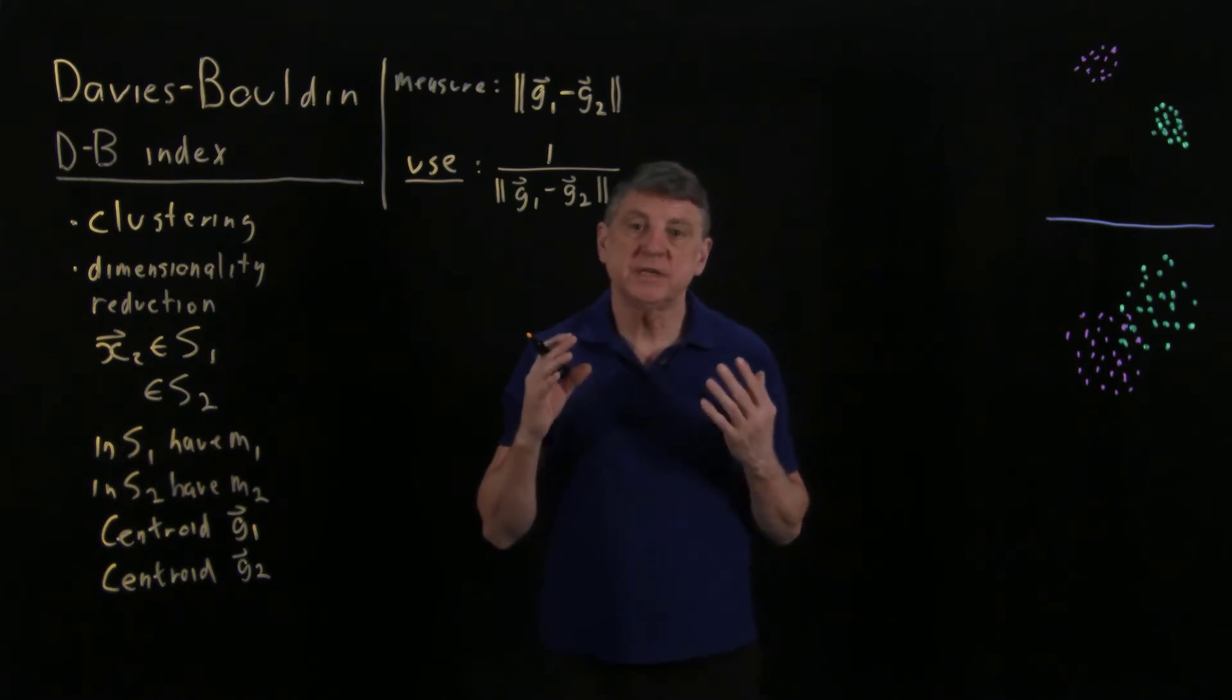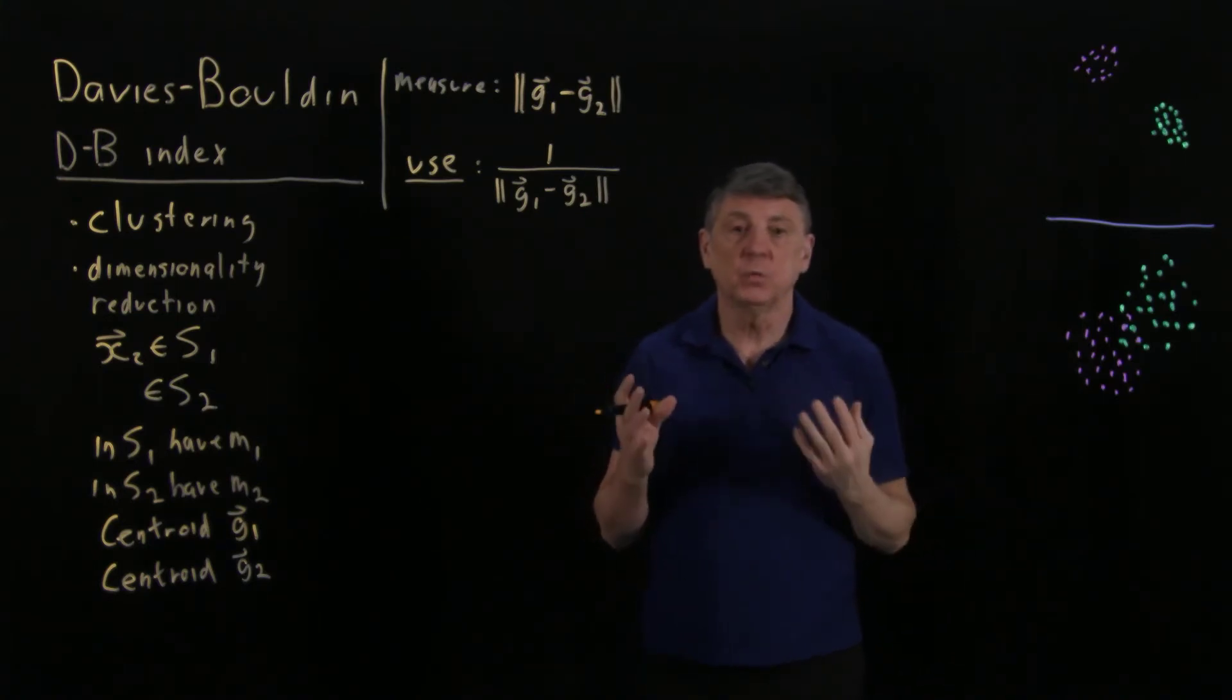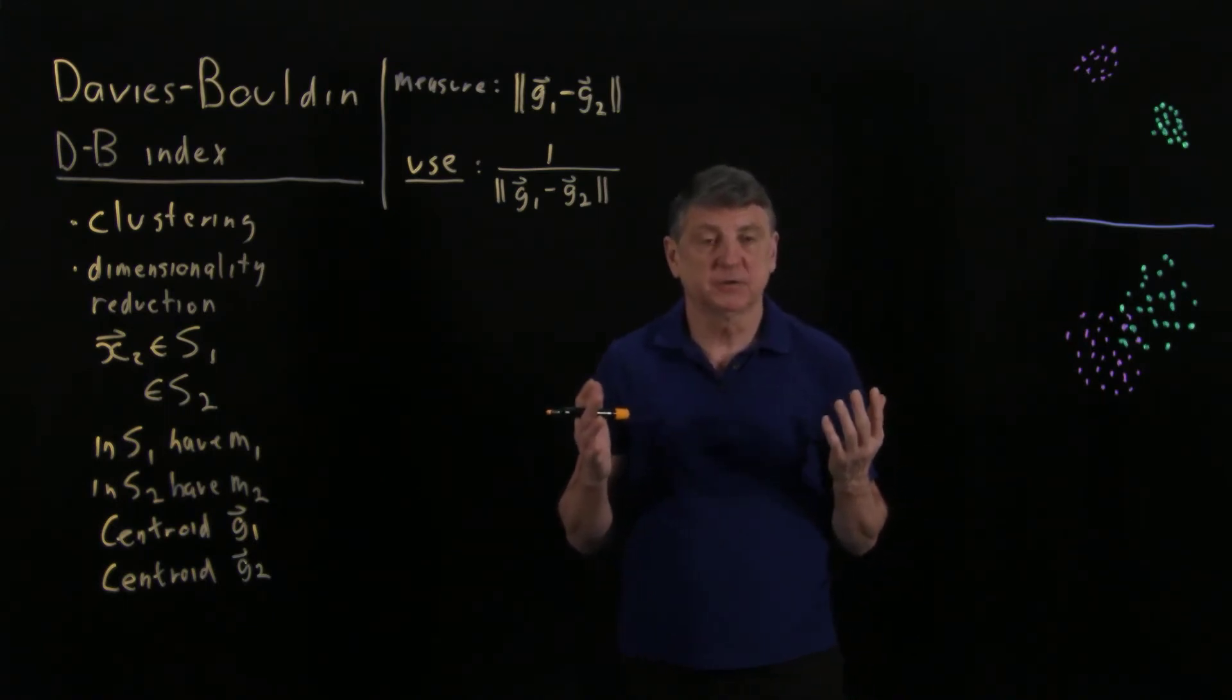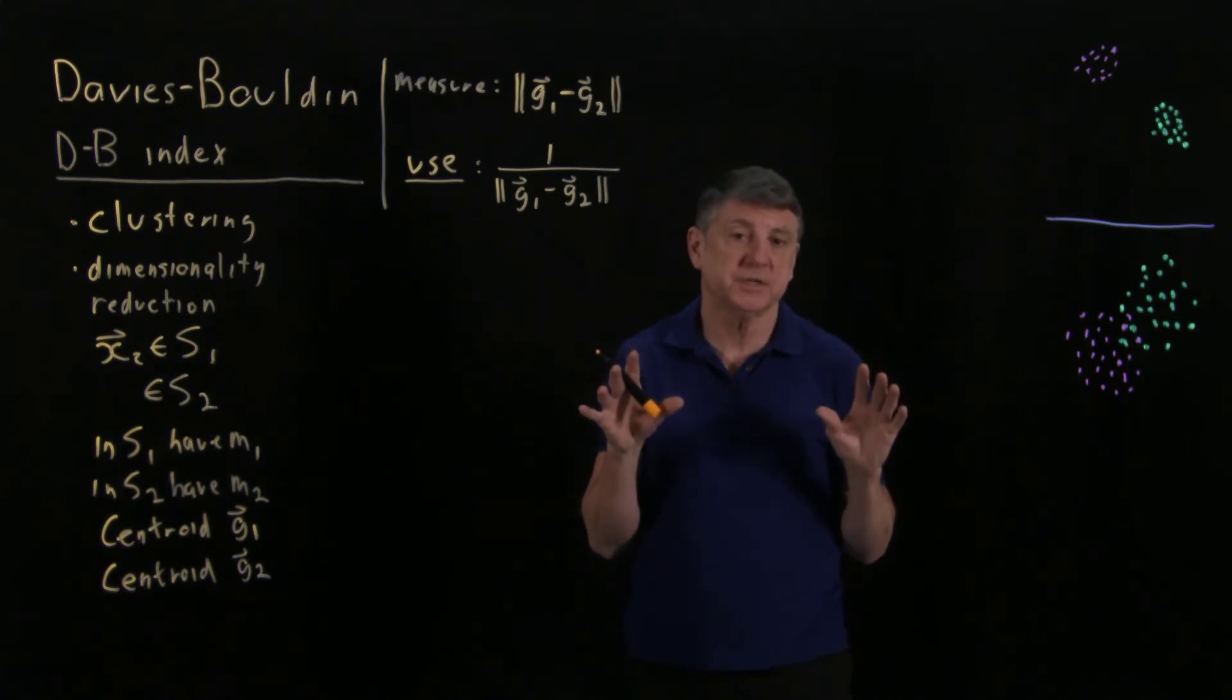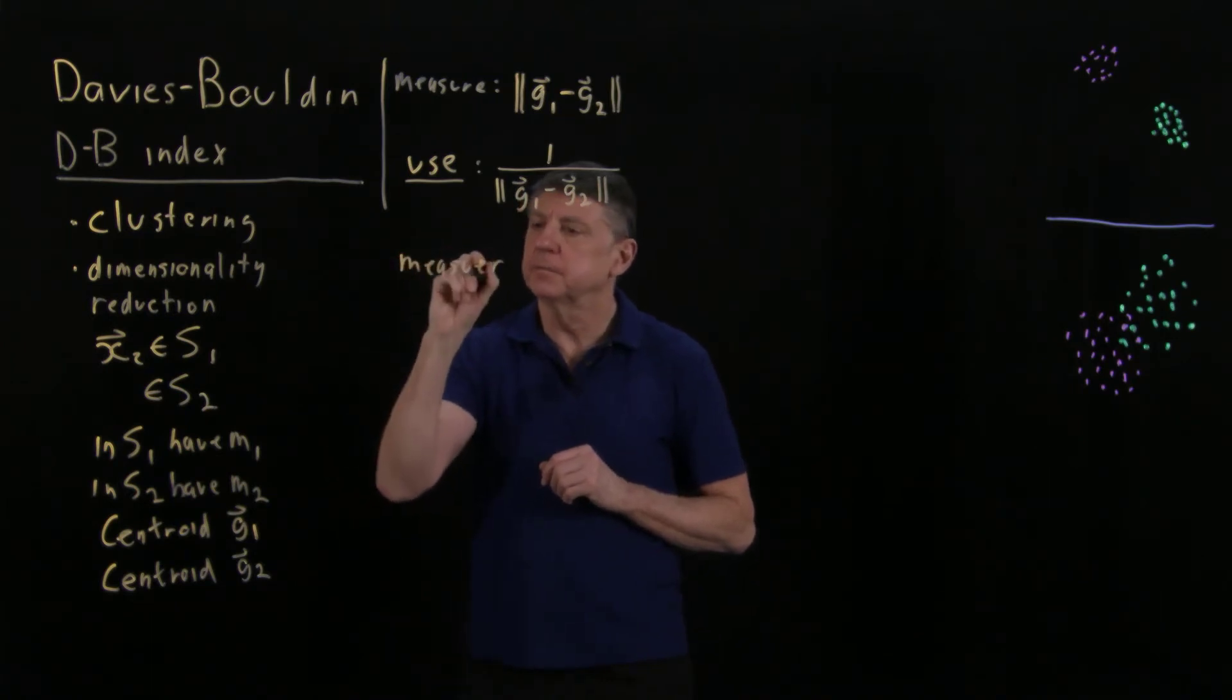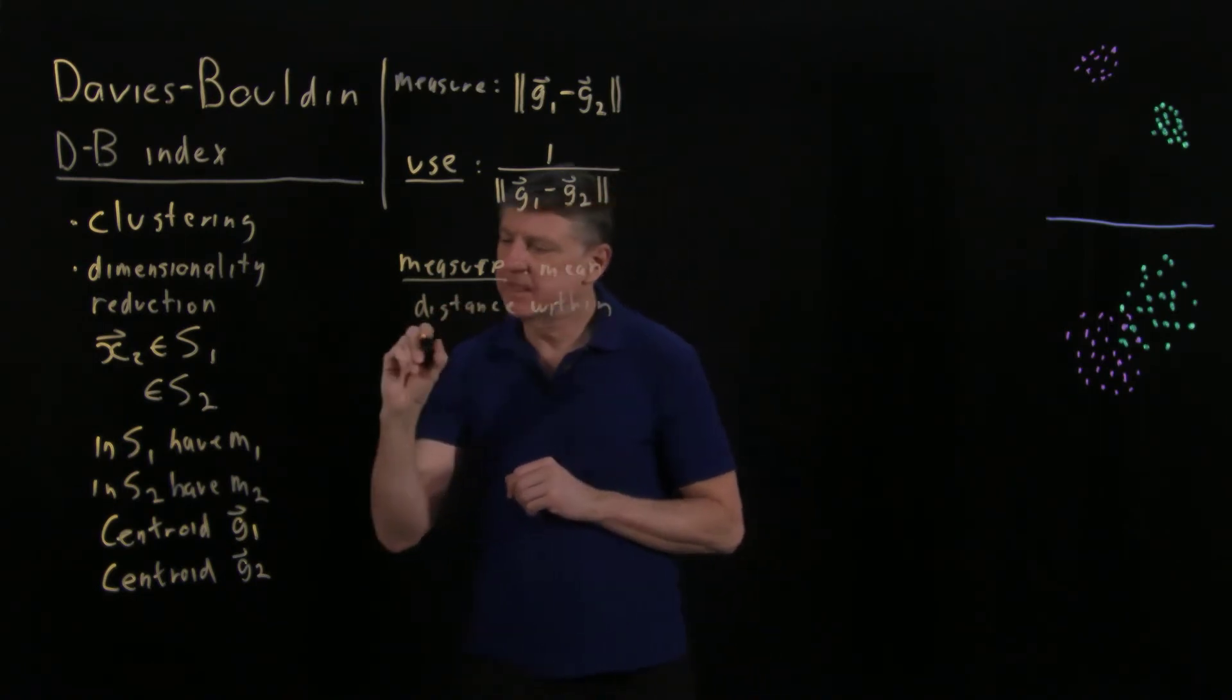So that is one part of the Davies-Bouldin index. That is how separated they are. The next thing we need to do is we need to figure out how dispersed the data are. So we would say that these have a low dispersion and these have a high dispersion. How could we measure dispersion? Well, one way that we could do it is to use variance. And if we were trying to use variance, what we would end up with in two dimensions, we would end up with a two by two covariance matrix. And it might be a little difficult to figure out when we have multiple clusters, and we have high dimensions, how do we manage a whole bunch of covariance matrices.